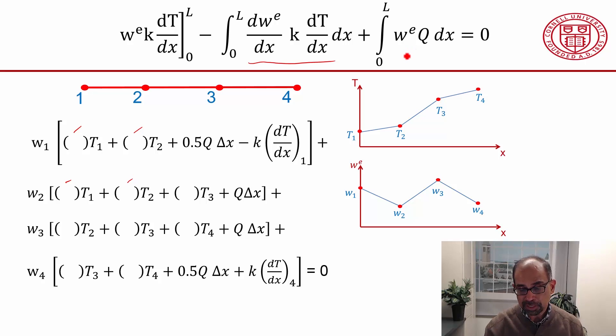We know that from integrating the source term, we will get these terms here, and that will come into the multiplication of all the weights at the nodes.